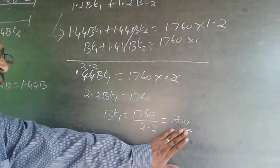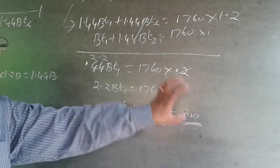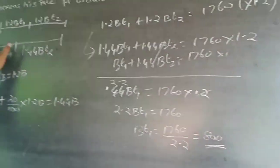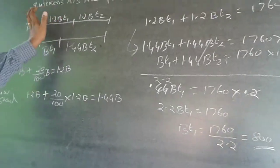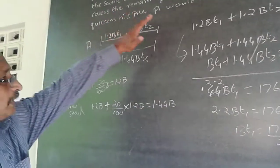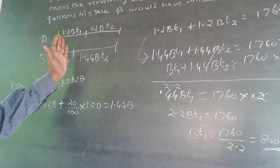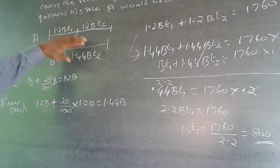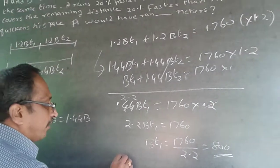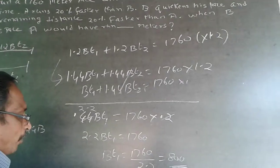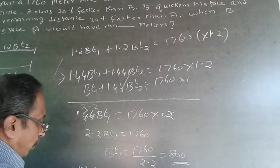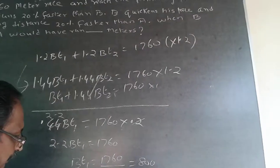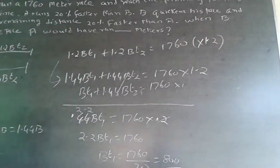But the answer is not 800 — don't be in a hurry. Find out what the question is actually asking. What you have found is B·T1 = 800, but what you want is 1.2B·T1, the distance run by A when B quickens his pace. So 1.2B·T1 = 1.2 × 800 = 960. The answer is 960.